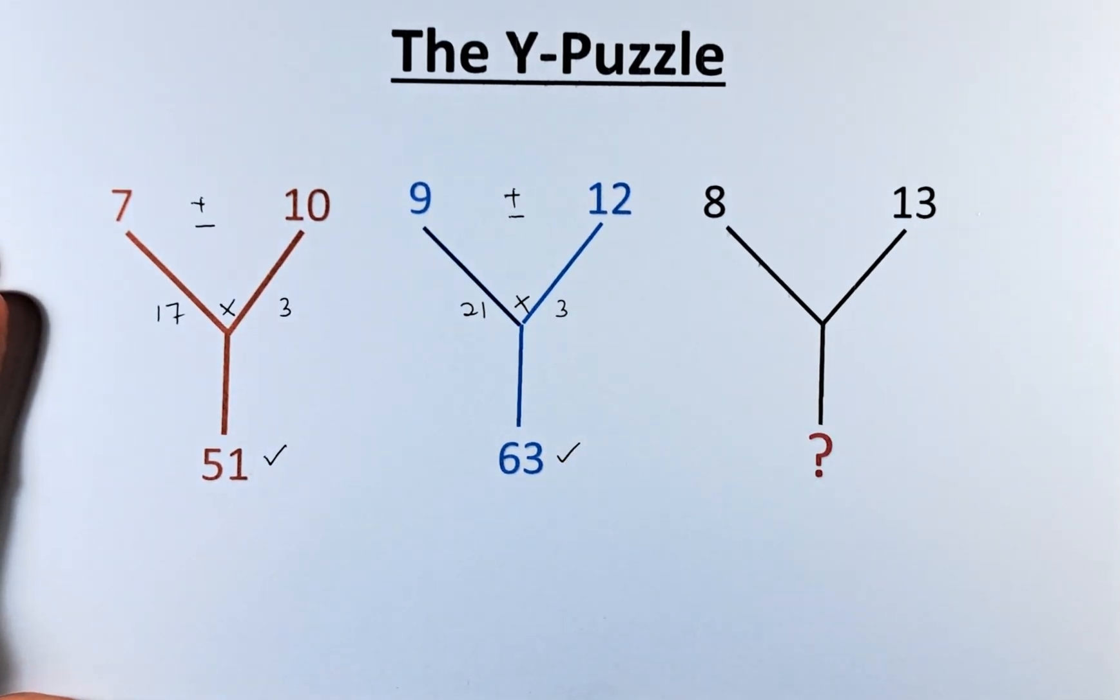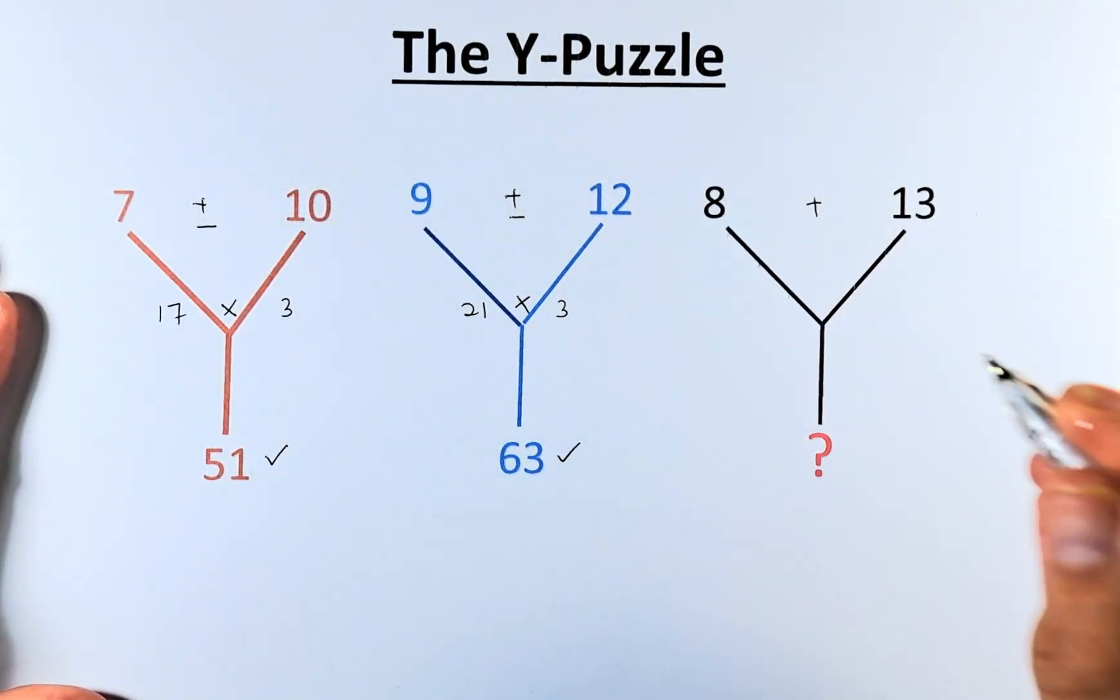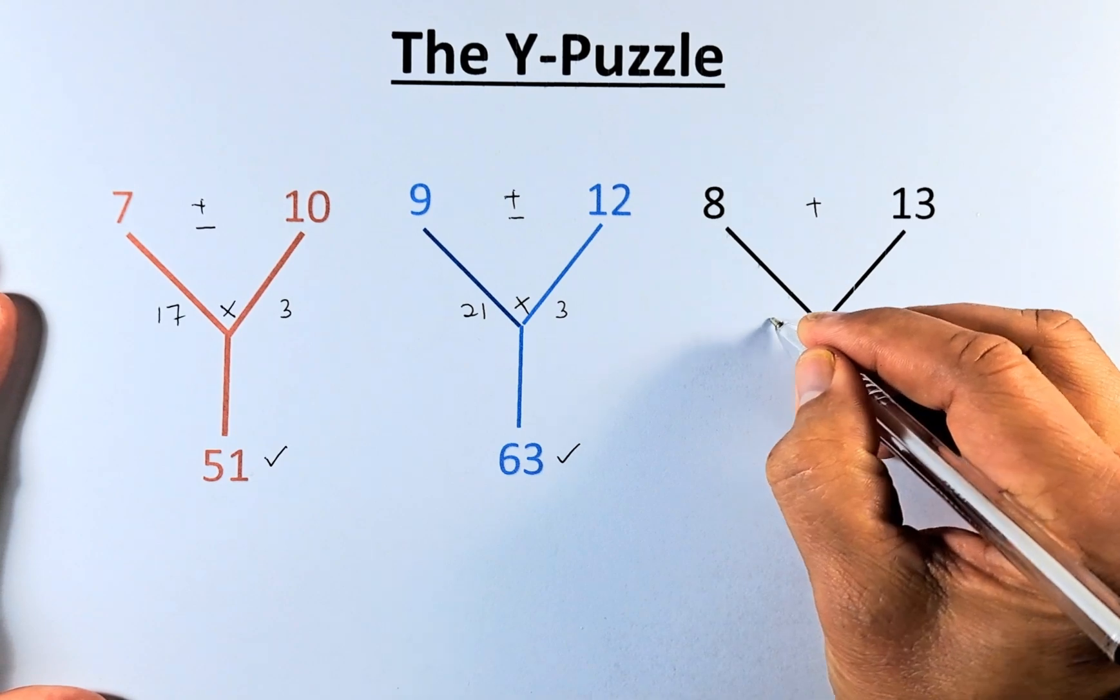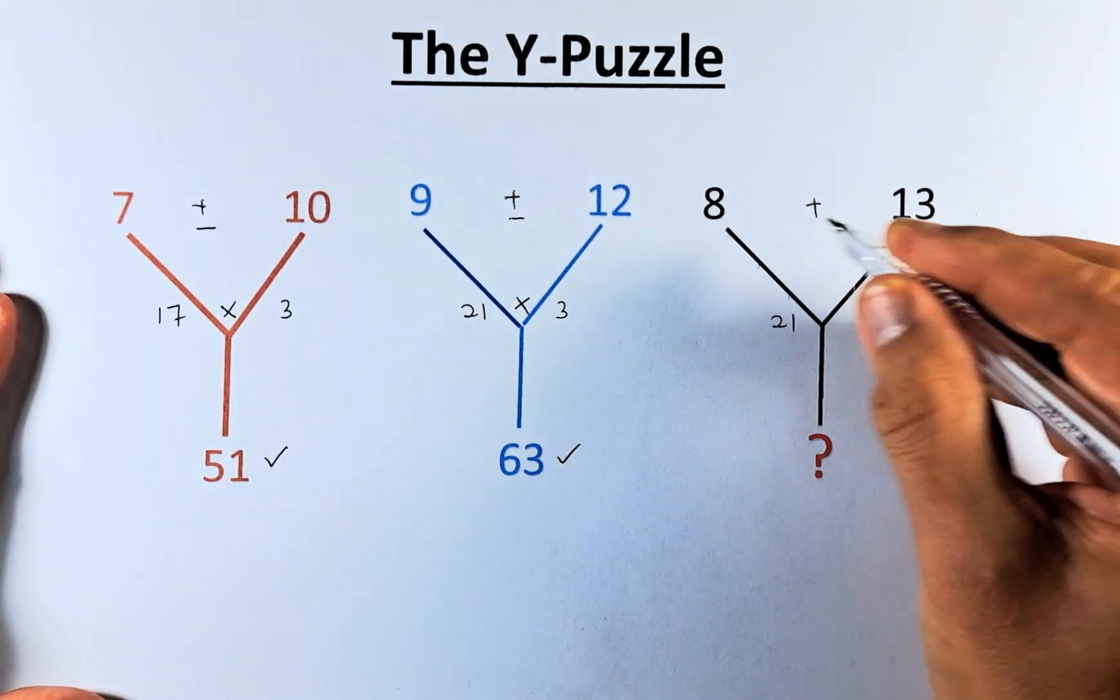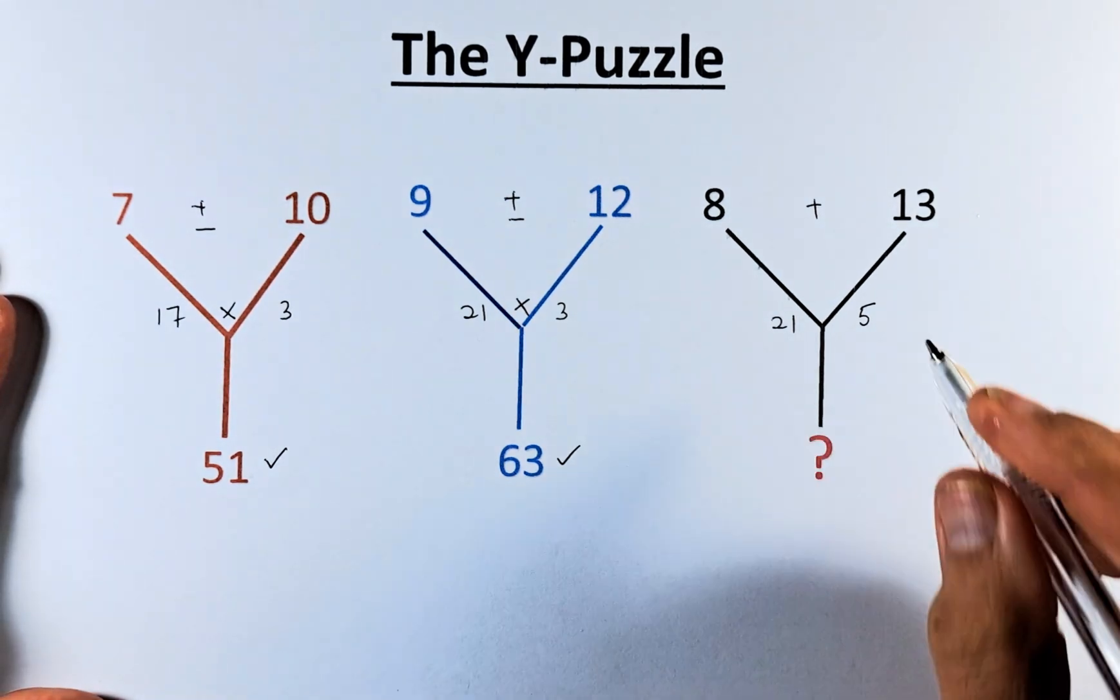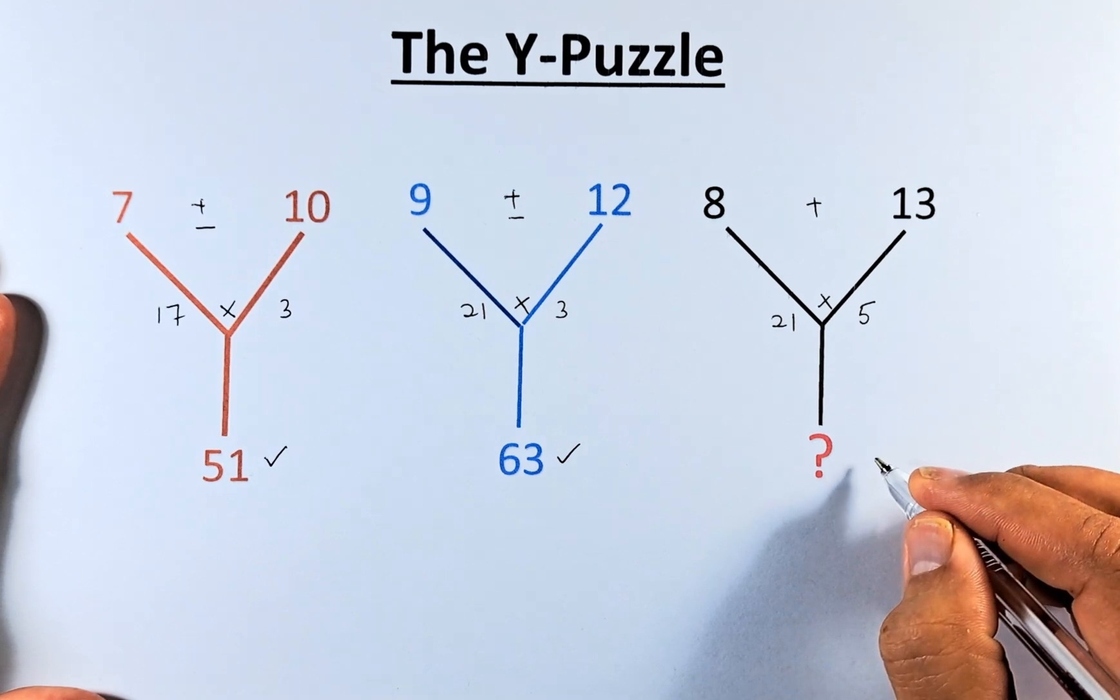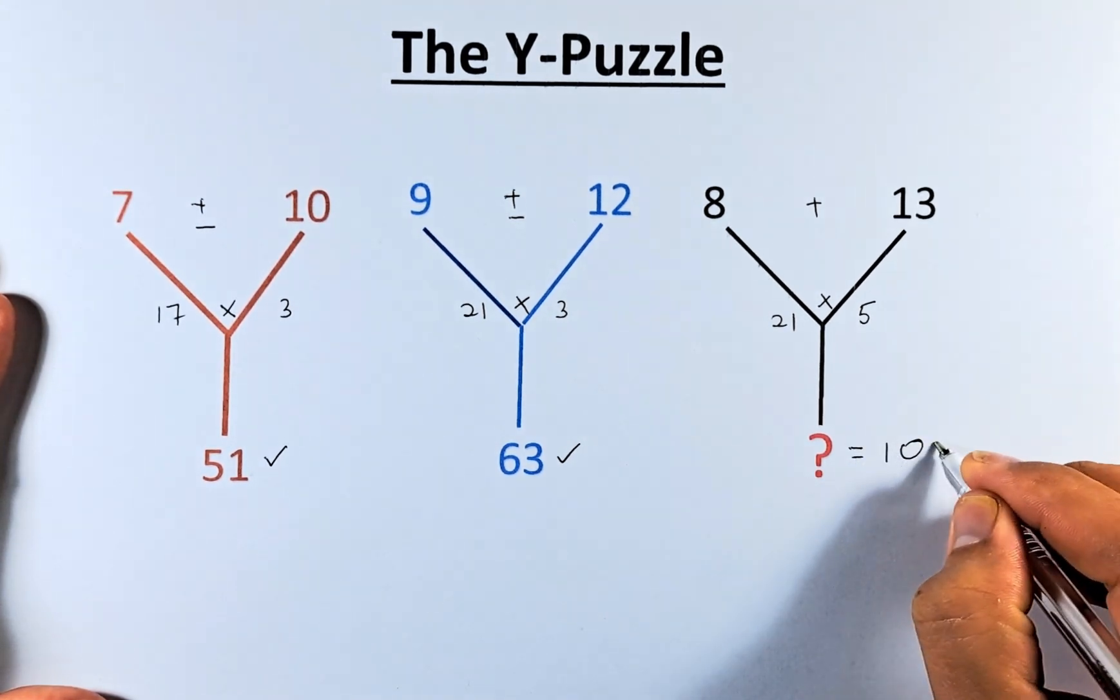And last but not least, we have 8, 13 and a question mark. So again, we're going to add them up first. 8 plus 13 is going to again be 21. 13 minus 8 is going to be 5. And then you take 21 times 5. You multiply them. 21 times 5. And the answer, the question mark is going to be 105.